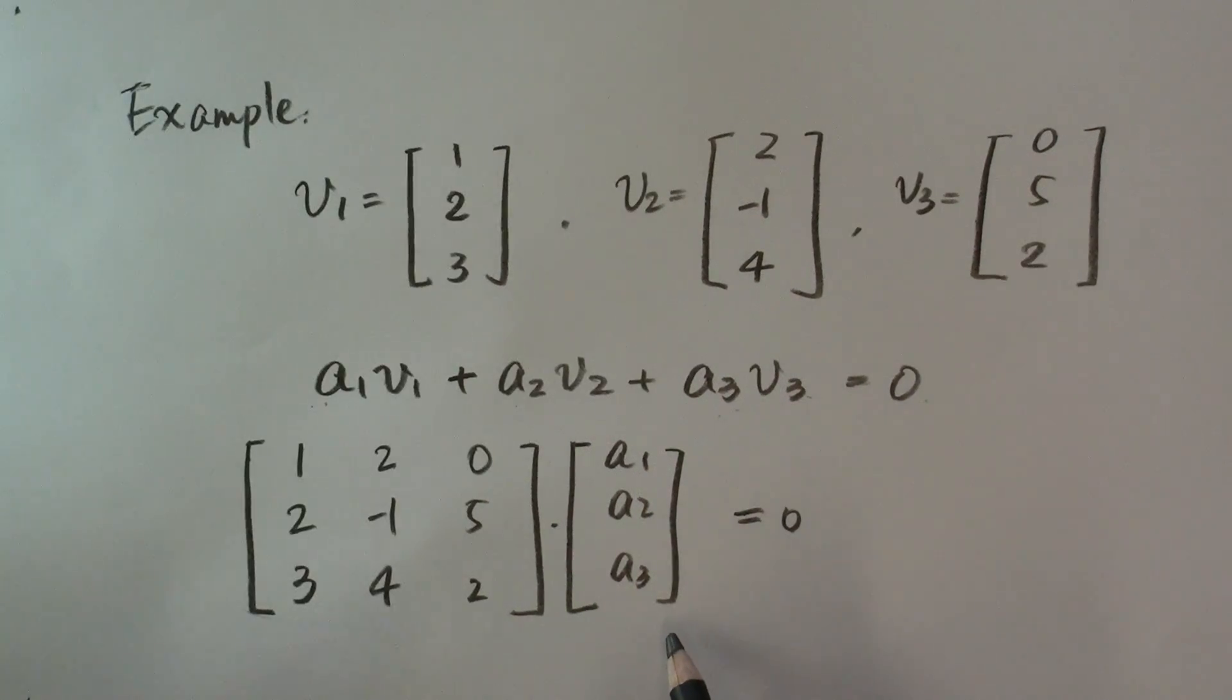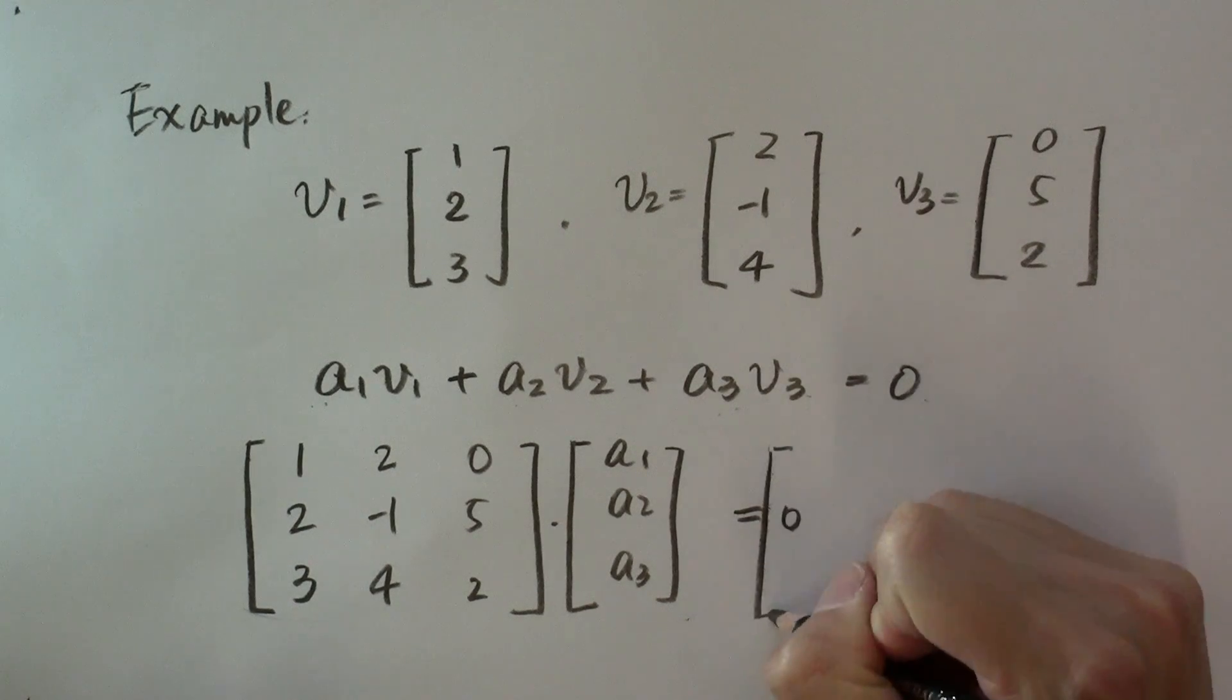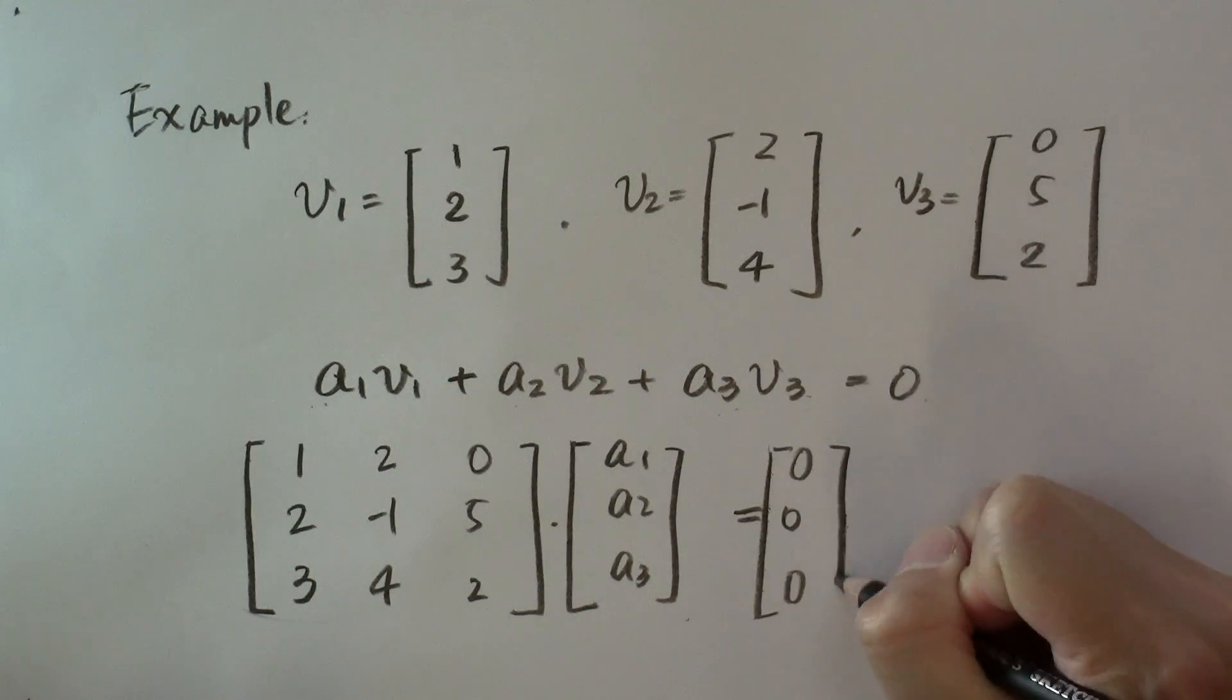And we recognize that this is a linear system. What kind of a linear system is this? That's right, it is a homogeneous system because the right-hand side is the zero vector. If I write it out, it's actually this zero vector.